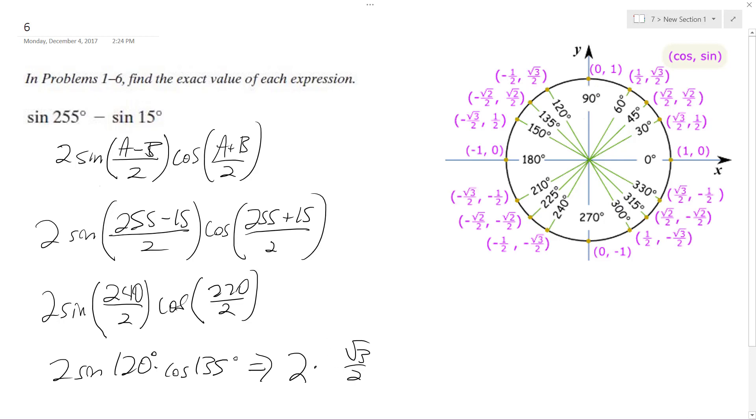Sine of 120 is right here. It's right here. And the cosine of 135 is equal to negative root 2 over 2.